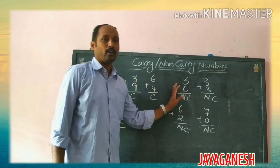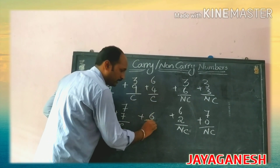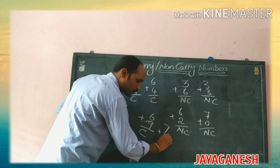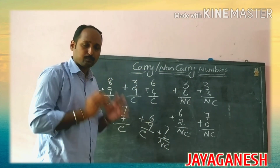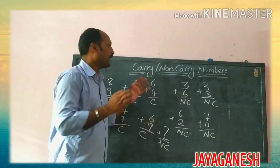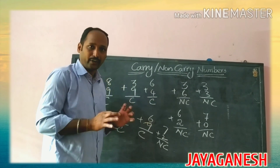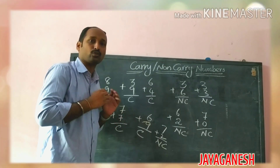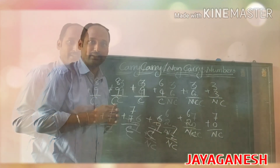This is called carry and this is called non-carry. Practice like this — if I ask six plus nine, it is carry; seven plus two is non-carry. Practice more on n-digits and carry/non-carry, make it perfect, and after that start addition. You can do additions very very fast. Thank you children, bye.